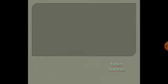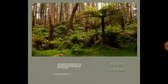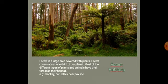Now, forest habitat. Forest is a large area covered with plants. Forest covers about one third of our planet. Most of the different types of plants and animals have the forest as their habitat. For example, monkey, bat, black bear, fox, etc.